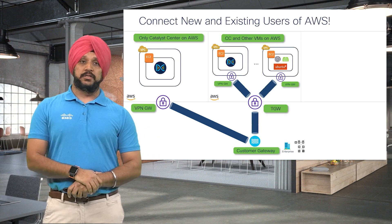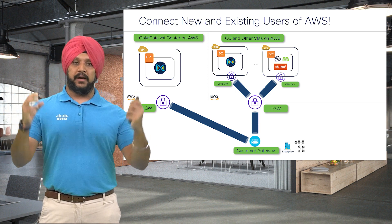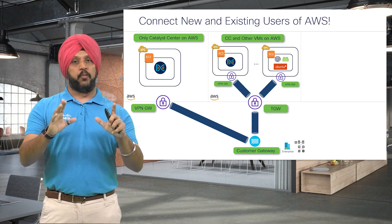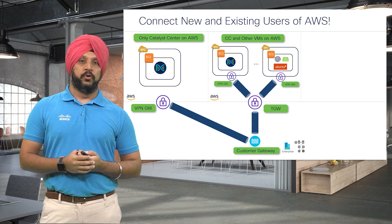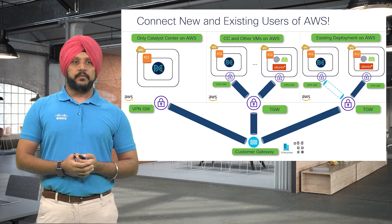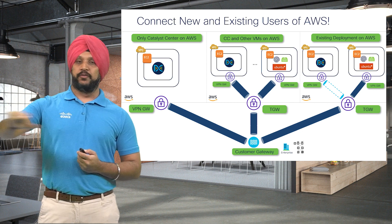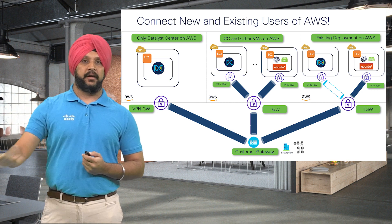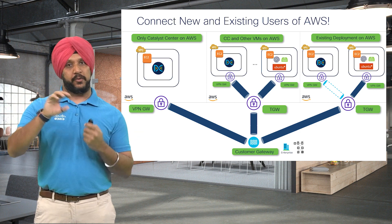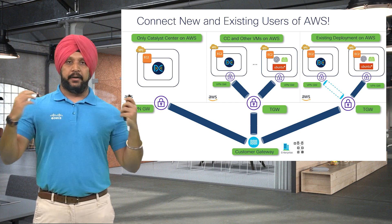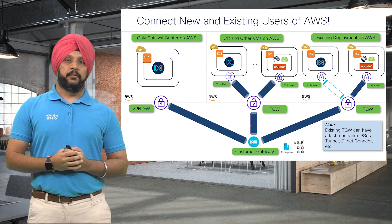The second set of customers are those who want more components on AWS, not just the Catalyst Center. For them, we create a transit gateway, which works like a hub-and-spoke model where multiple VPCs can be created connecting to the transit gateway, which then connects to the enterprise firewall or router. We also support existing AWS customers — say you already have a transit gateway with SD-WAN or Direct Connect connectivity back to your corporate network. You can use that with Launchpad to create a new VPC, connect it to the transit gateway, and create a Catalyst Center.